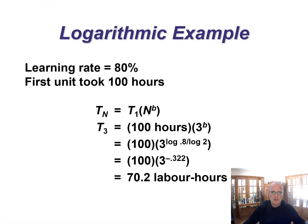Let's look at a quick example. Learning rate is 80%, the first unit took 100 hours, and we want the third unit. Since we can't use the doubling factor, we use the logarithmic approach: 100 times 3 to the power of b, where b is the log of the learning rate divided by the log of two, which gives us negative 0.322. It's often worth calculating b separately and keeping it as a separate number because you might need to use it several times.